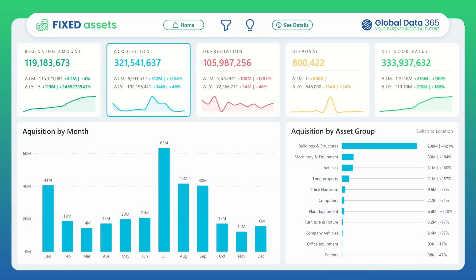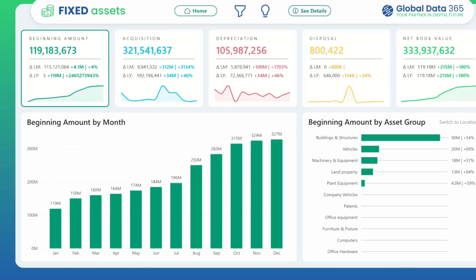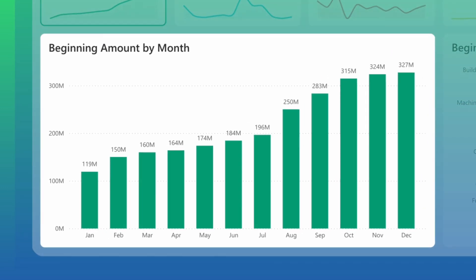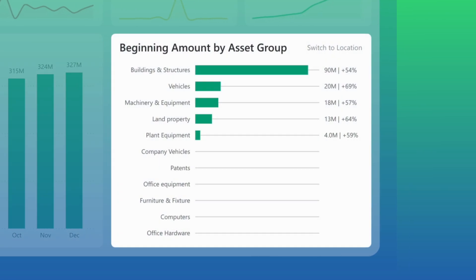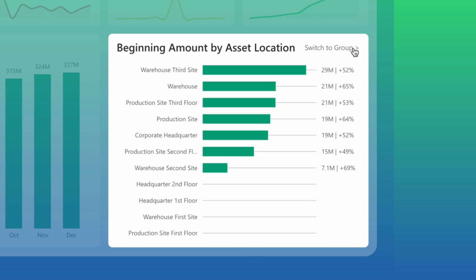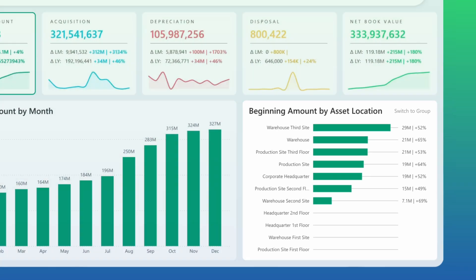First, we explore beginning amount by month, which tracks the total value of fixed assets at the start of each month. Beginning amount by asset group provides a clear view of how your fixed assets are distributed across different categories, and you can switch to beginning amount by location to view assets distributed across locations.